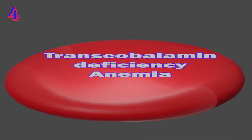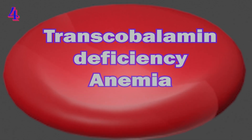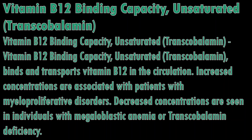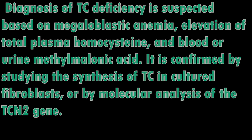Transcobalamin deficiency anemia: transcobalamins are carrier proteins that bind to vitamin B12. Type 1 is produced by salivary glands; it attaches to vitamin B12 in food and protects it from acid degradation in the stomach, releasing vitamin B12 in the neutral duodenum. From there vitamin B12 attaches to intrinsic factor. Type 2 transcobalamin transports vitamin B12 after degradation of the vitamin B12-intrinsic factor complex.